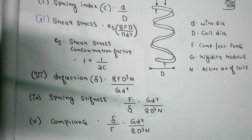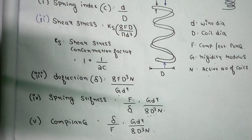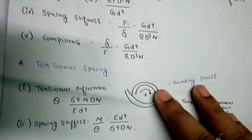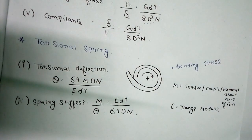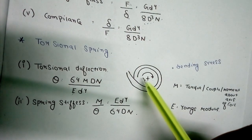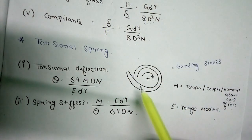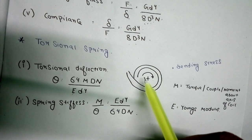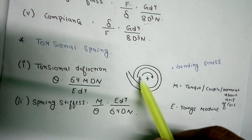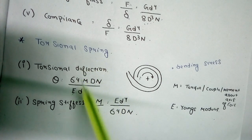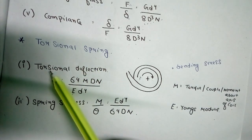Now, the other type of helical spring is the torsional spring. In a torsional spring, we apply a twist — the spring is always under a twisting action. This distinguishes it from the compression or extension spring.